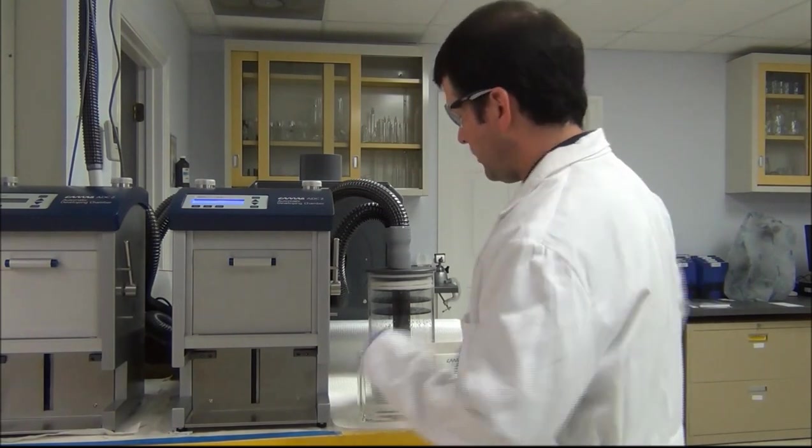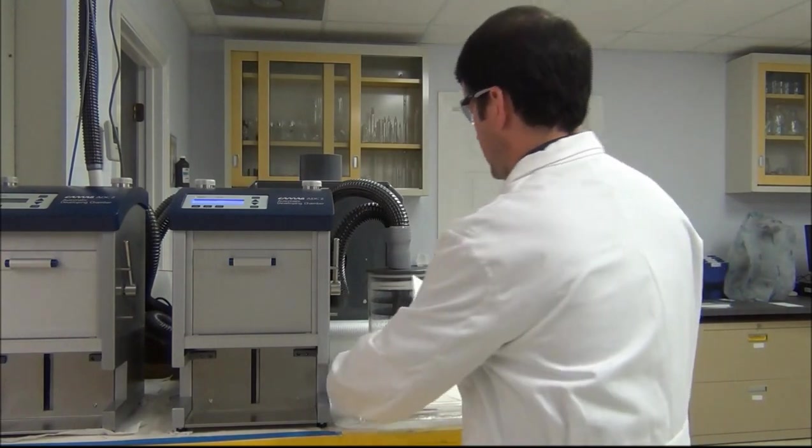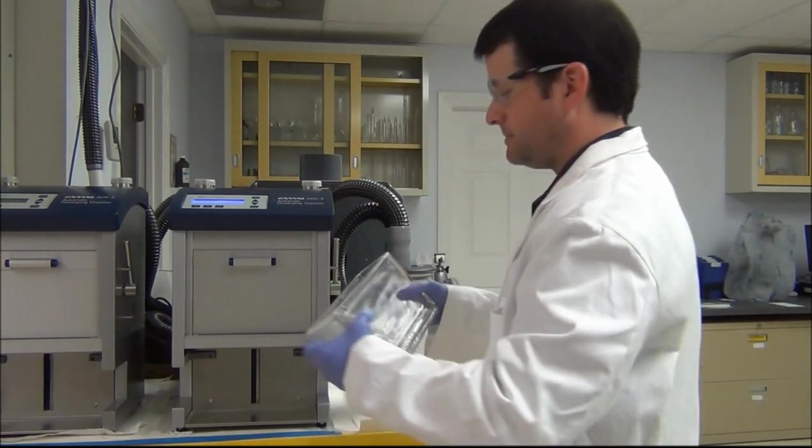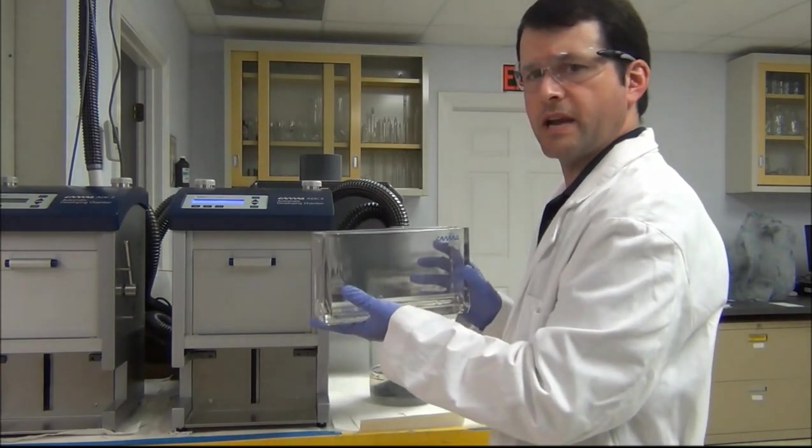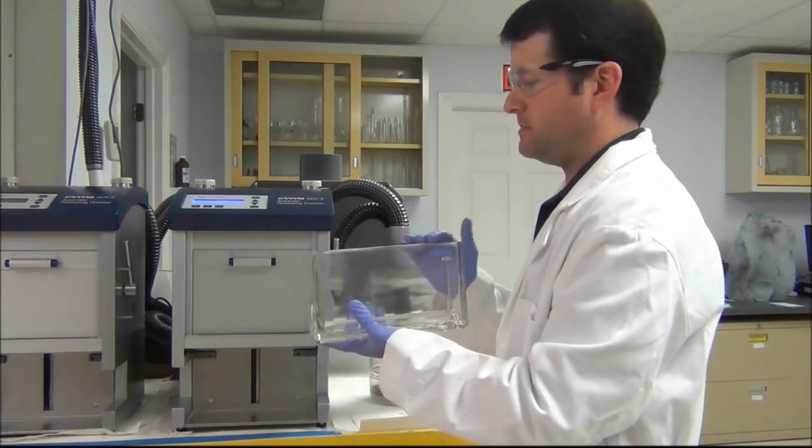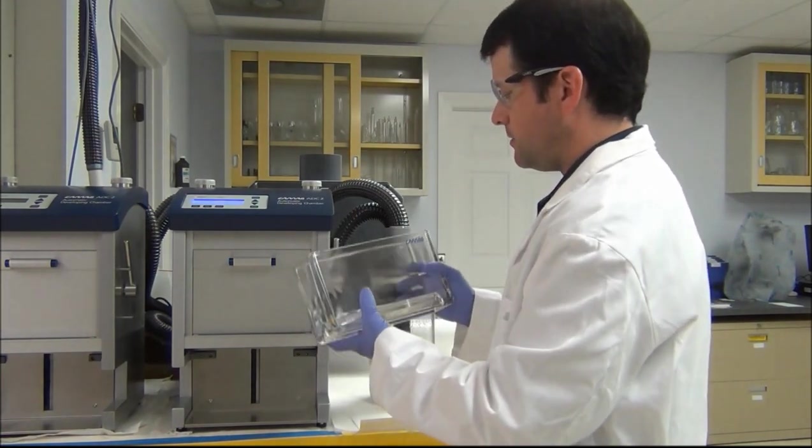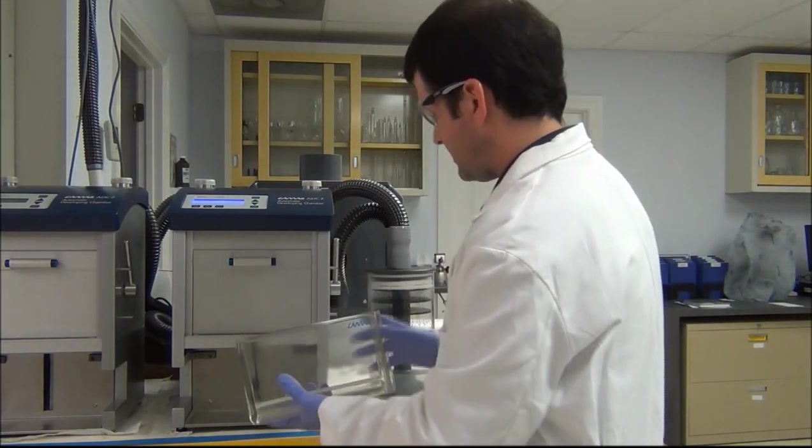Now, we need to load the chamber into the ADC2. Here we have a 20 by 10 glass twin trough chamber. This is a special chamber for this instrument, manufactured with better tolerances, and we're going to put this inside the unit.